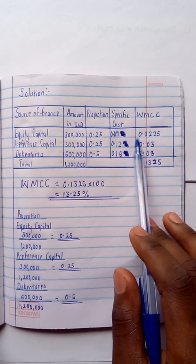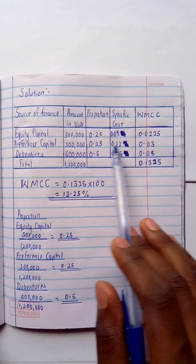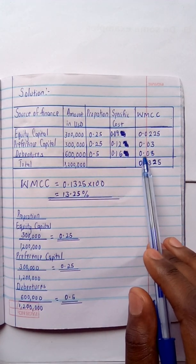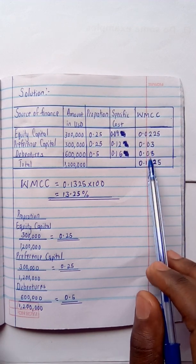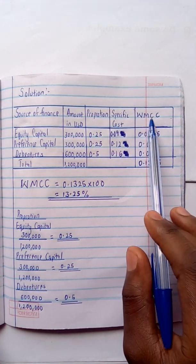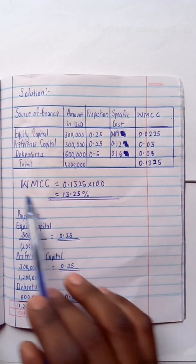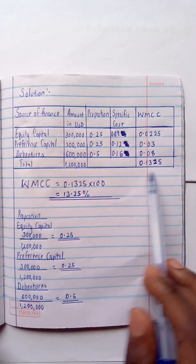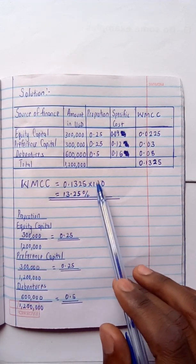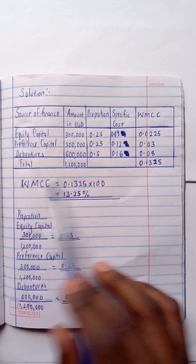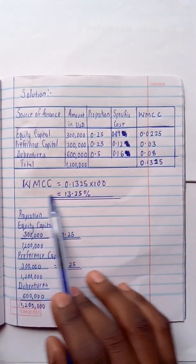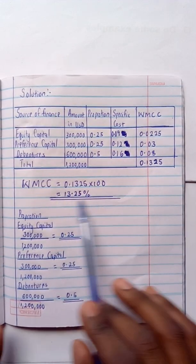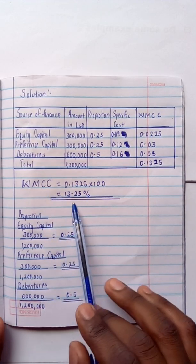Multiplying proportion by specific cost: equity gives 0.0225, preference capital gives 0.03, and debentures gives 0.08. Adding all of these together gives the Weighted Marginal Cost of Capital as 0.1325. Converting to a percentage by multiplying by 100, the Weighted Marginal Cost of Capital equals 13.25%.